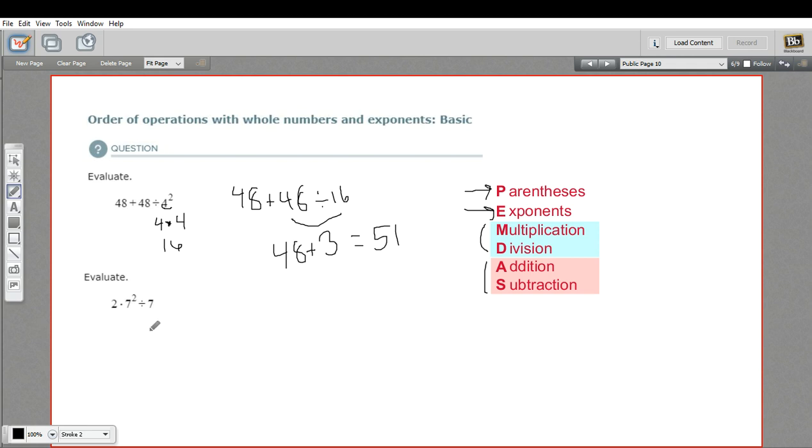Let's try one more. In this one, we have 2 times 7 to the second power divided by 7. So here's our exponent part. 7 squared, or 7 to the second power, is 7 times 7. That's 49.